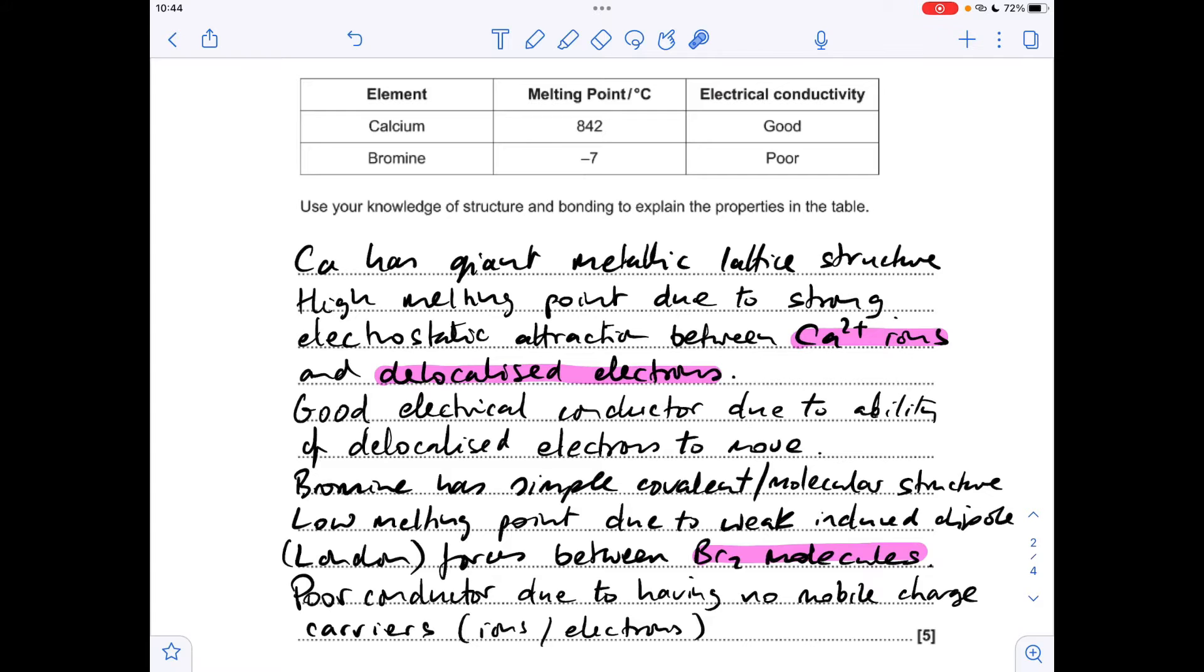Just before I move off this question, see I've highlighted some key words there. Remember it's really important you call things by the correct name. In calcium, in any metal you've got metal ions - in the case of calcium it's the 2+ ion - and you've also got delocalized electrons. In the case of a simple covalent or a simple molecular structure you've got molecules attracting each other, in this case with induced dipole forces or you could have also said London forces.